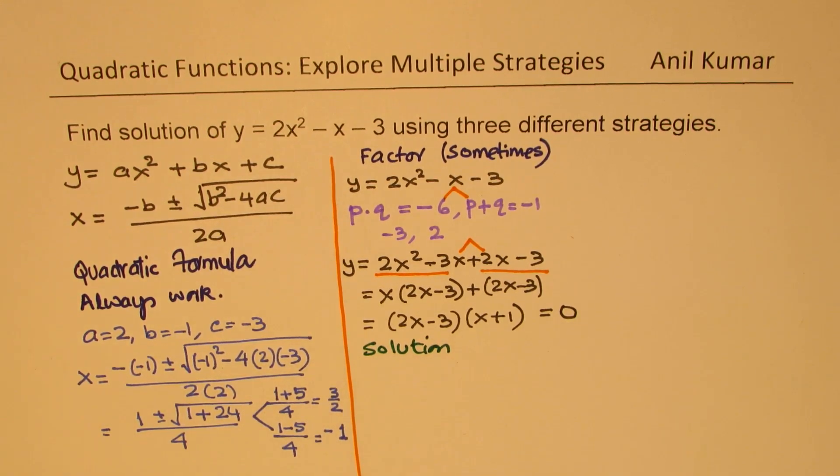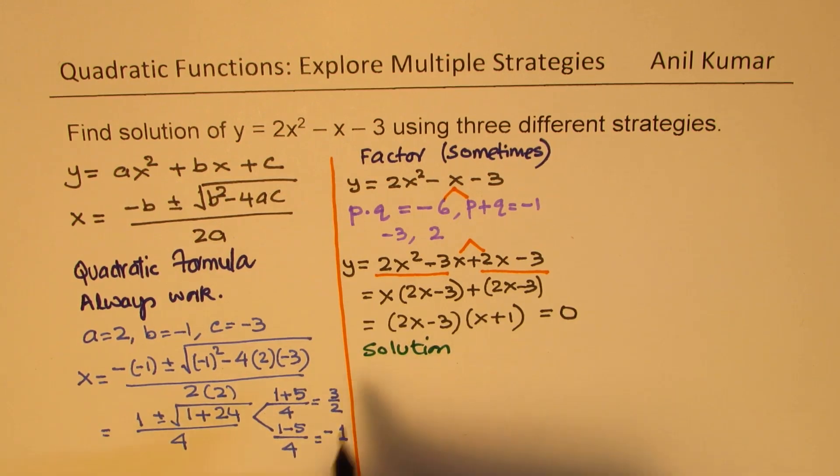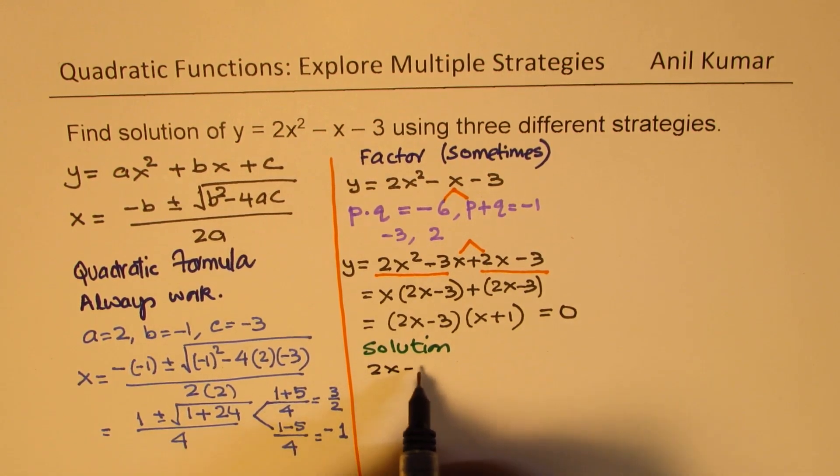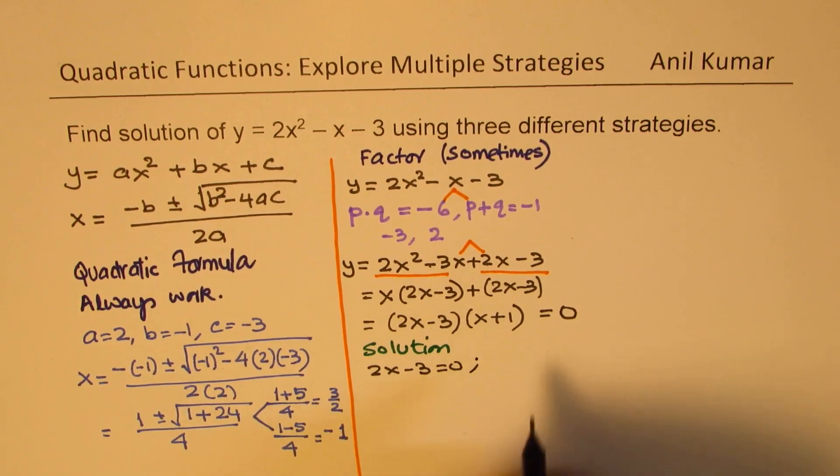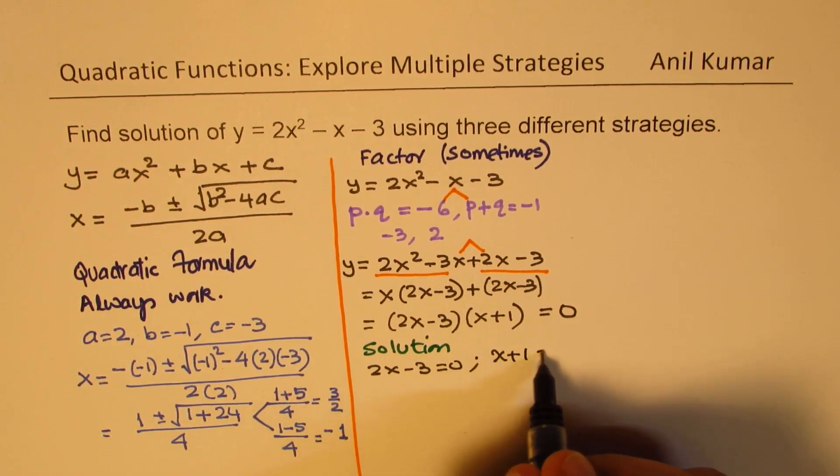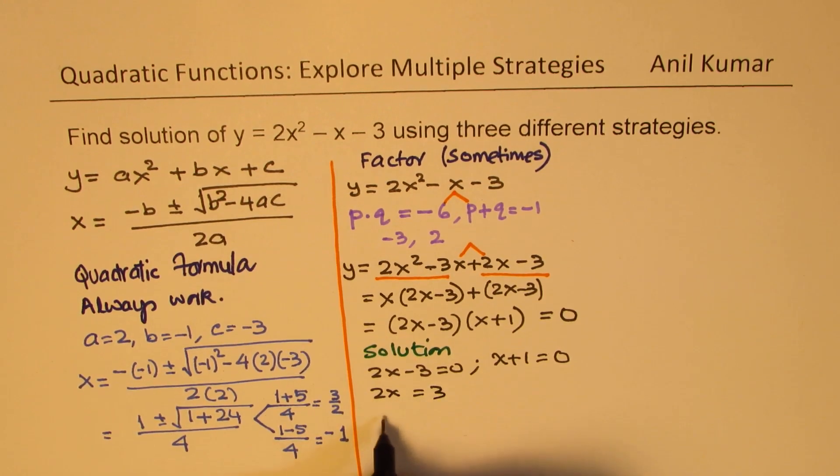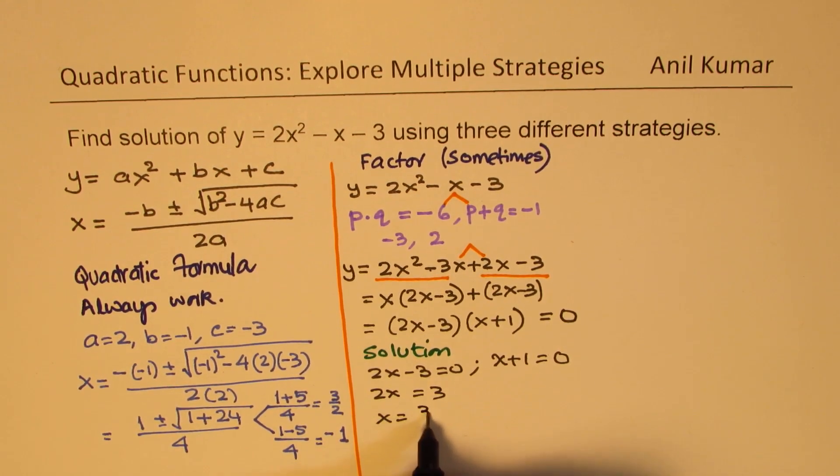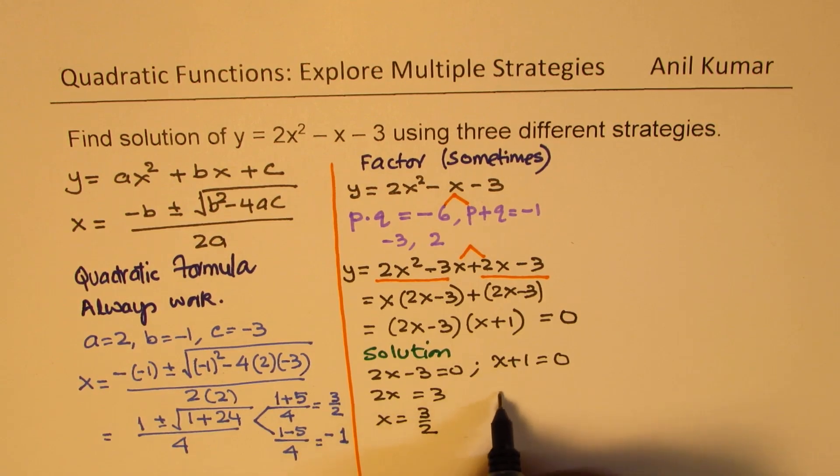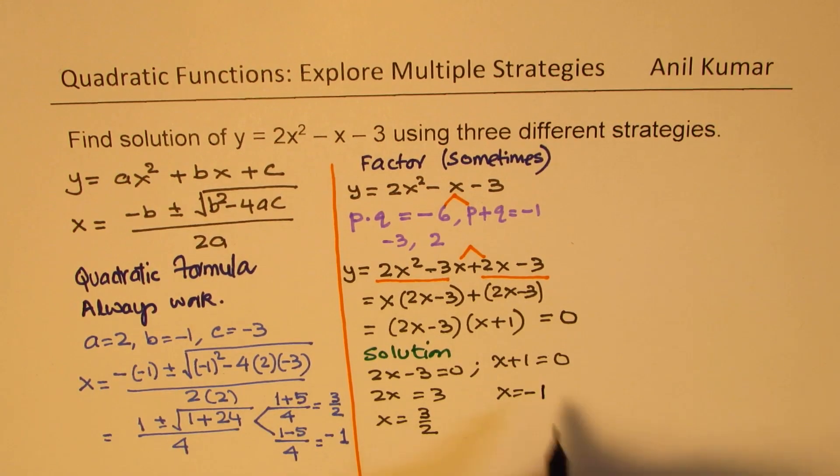Now when we are saying that these two products when multiplied gives you 0, it really means that 2x minus 3 equals 0 and x plus 1 equals 0. That gives you 2x equals 3 or x equals 3 over 2. And in this case, we get x equals minus 1.